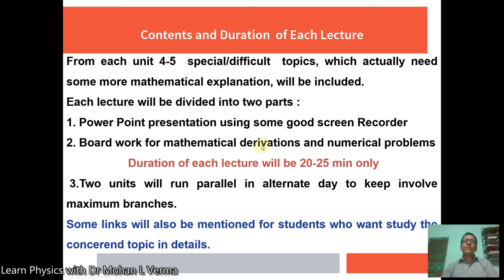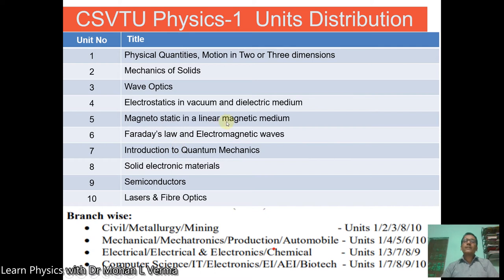The second part is especially for average and below-average students who are facing problems with the derivation of some physical terms. Two units will be run in parallel on alternate days to keep maximum branches involved, and some links will be mentioned for students who want to study the content topics in detail. This is the CSVD Physics 1 syllabus — 10 units in total, out of which five units are allocated to students of each branch. The units include physical quantities and motion in three dimensions, mechanics of solids, wave optics, electrostatics in vacuum and dielectrics, and so on, up to the tenth unit: lasers and optical fiber.